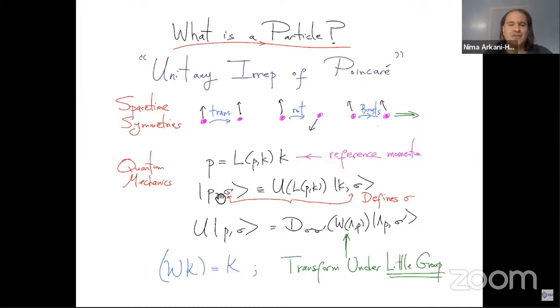And so you can imagine that a particle, just by diagonalizing translations, is characterized by giving some energy and momentum satisfying the on-shell mass condition. And it can have some other labels too, sigma, and we can start from some reference momentum and define all other reference momentum by some canonical boost that takes us from K to P. And we can use the unitary representation of that special boost to define what I mean by the other labels that the particle might have other than its momentum.